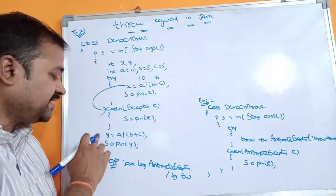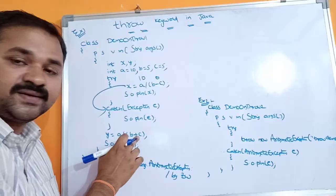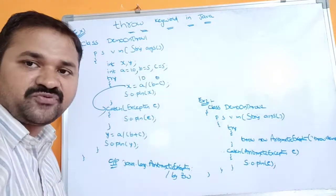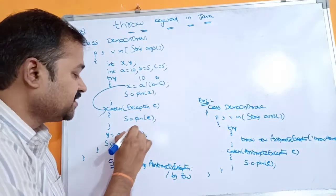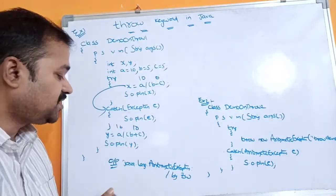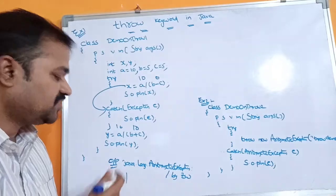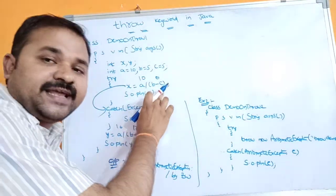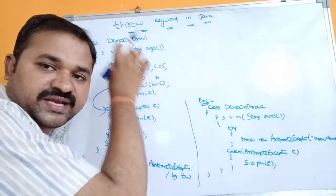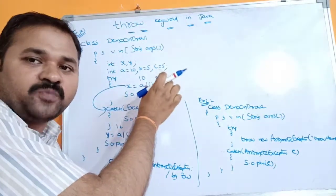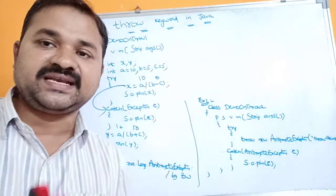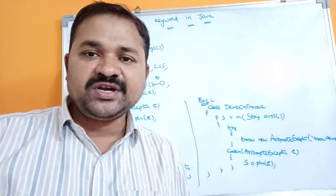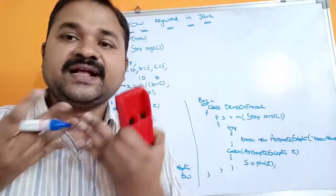After the catch block, we have two statements. y = a / (b + c): b is 5, c is 5, so 5 plus 5 equals 10, and 10 divided by 10 equals 1. System.out.println(y) prints 1. So in this example, an exception occurs in the try block and the throw keyword throws that exception object to the catch block implicitly. This example demonstrates how the throw keyword throws exception objects implicitly.